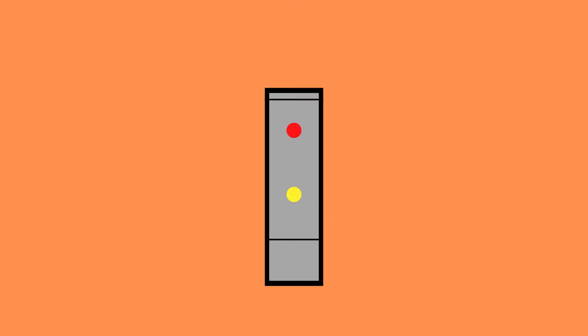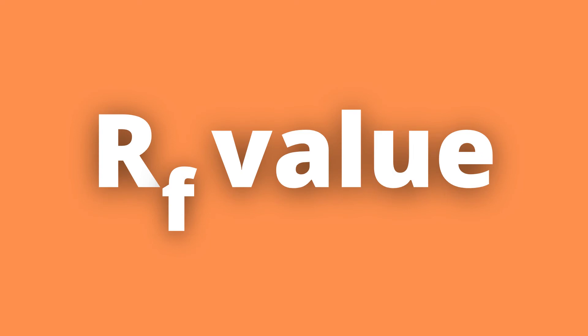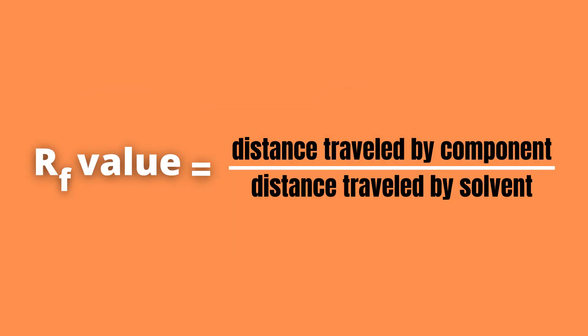These different lines can then be used to calculate something called the RF values, which help us identify what compounds are present in the sample. This RF value is calculated using the formula: RF equals the distance traveled by the component divided by the distance traveled by the solvent.